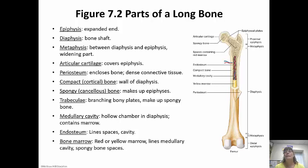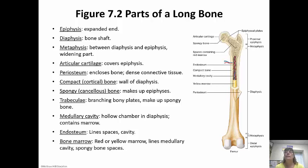On the ends of the epiphysis is articular cartilage, which is hyaline cartilage — the weakest of the cartilages — but it helps protect the ends of the long bones. The periosteum is the membrane that covers the bone, made of dense connective tissue. Compact bone forms the wall of the diaphysis, and spongy bone, also known as cancellous bone, makes up the epiphyses.